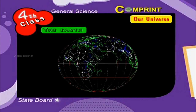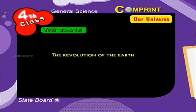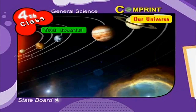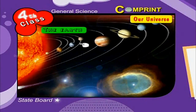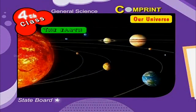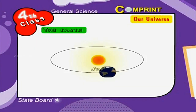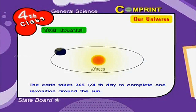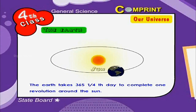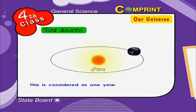The revolution of the earth: the Sun and the planets around it are called the solar system. The earth is one of the planets in the solar system and also goes around the Sun due to attraction along with the other planets. The movement of the earth around the Sun is called the revolution of the earth. The earth takes 365 and one-quarter days to complete one revolution around the Sun, which is considered as one year.